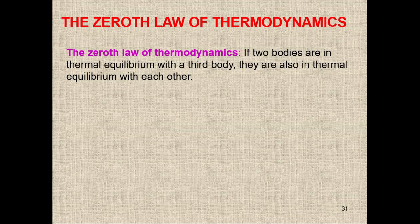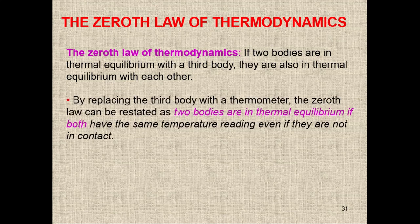Now we have the zeroth law of thermodynamics. You know the first law — energy can neither be created nor destroyed, or the total energy of the system and surroundings remains constant. The zeroth law states: if two bodies are in thermal equilibrium with a third body, they are also in thermal equilibrium with each other. So if we have bodies A, B, and C, and the temperature of A equals B and B equals C, then the temperature of A and C will also be equal.